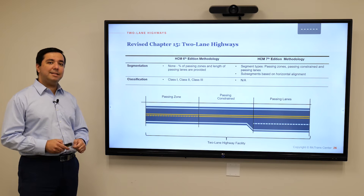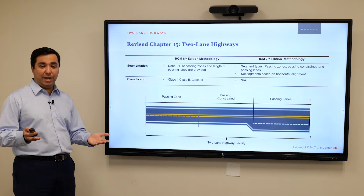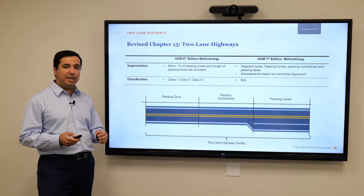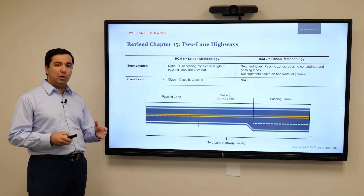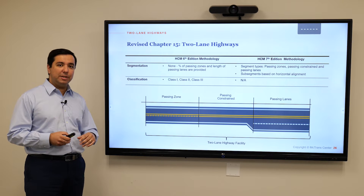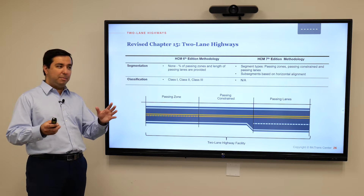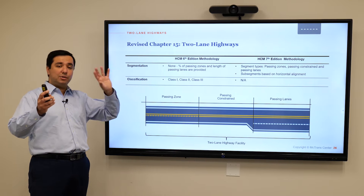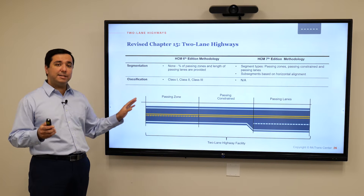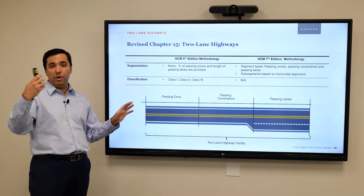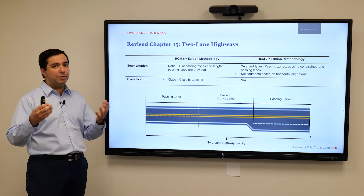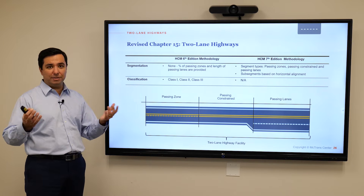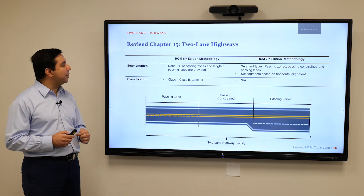So with that said, let's take a look at what we have in this new methodology. The way I'm going to go over this new edition is by showing it in the form of a table to contrast what was in HCM 6 versus what is new in HCM 7, so that we all understand what is gone and what is no longer valid.